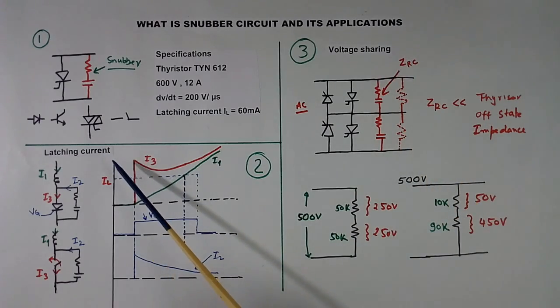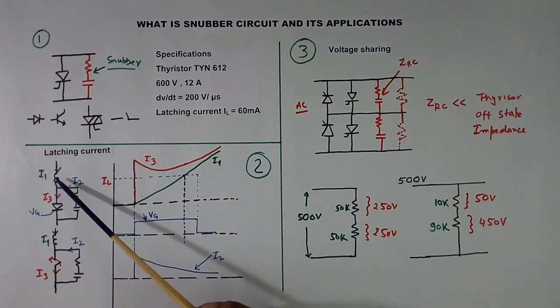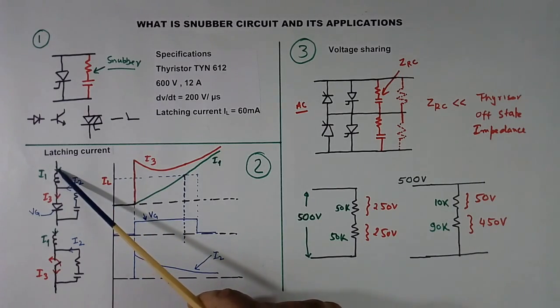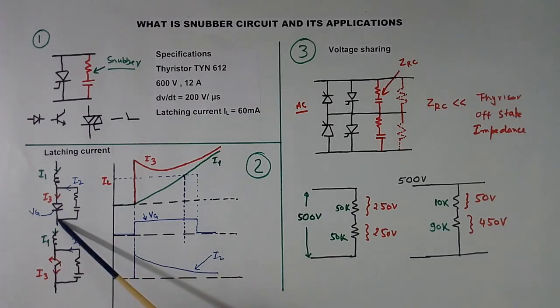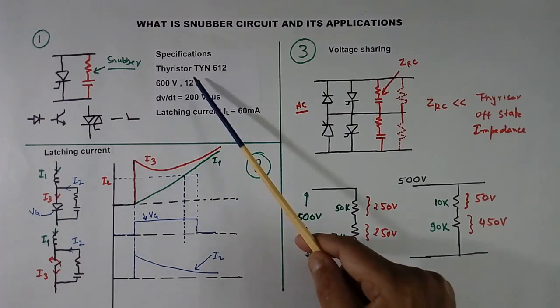First application is helping in latching current development. When we trigger the thyristor, a current will start flowing when thyristor becomes on. And this wire will have some inductive load, or wire inductance, or transformer inductance. So current in thyristor will increase slowly. It will take some time to reach latching current.